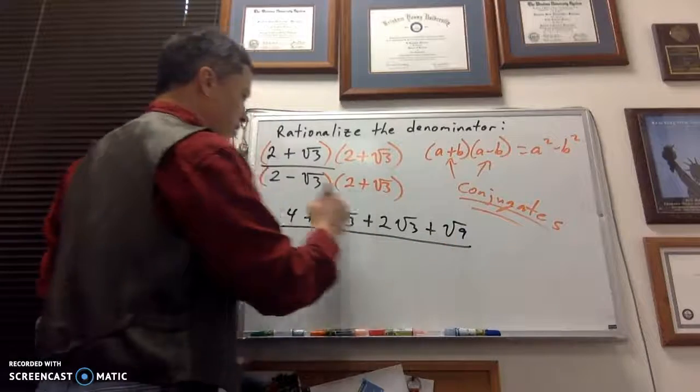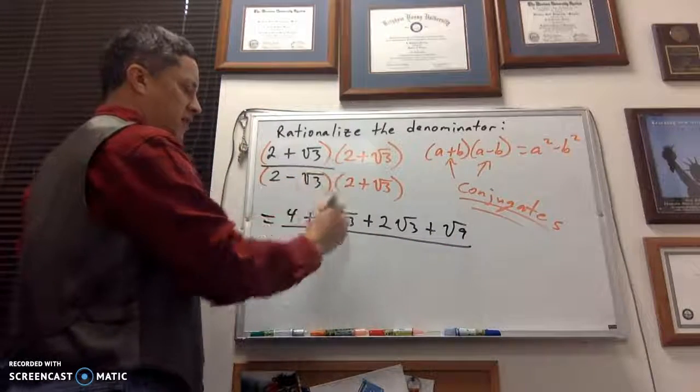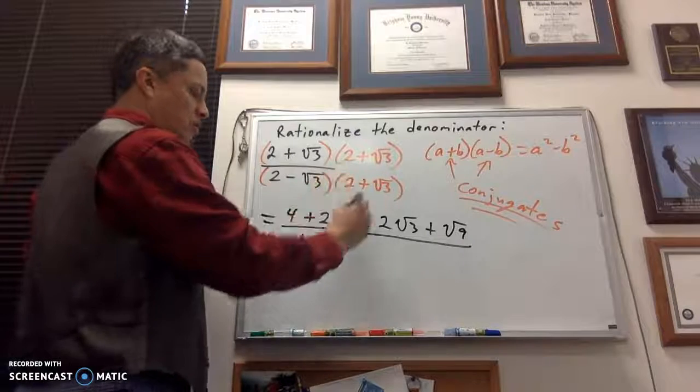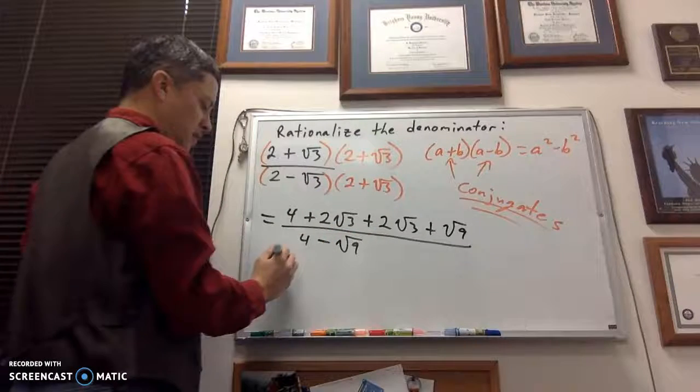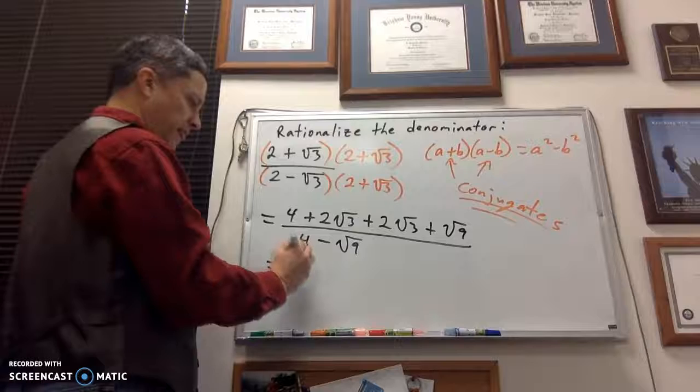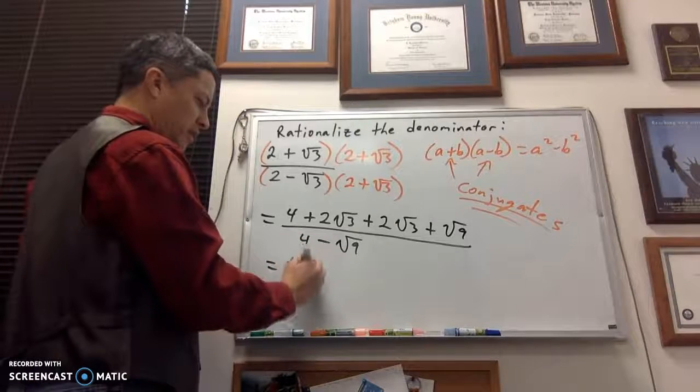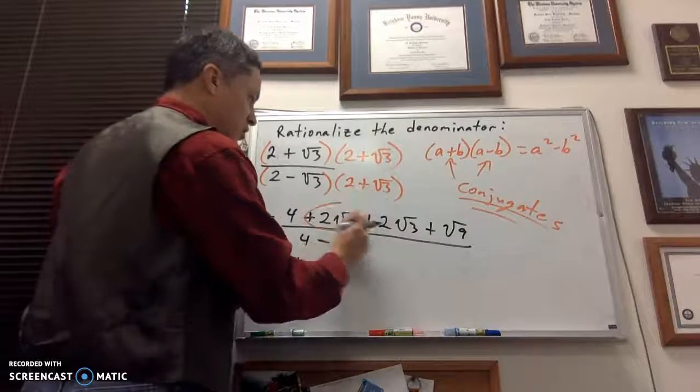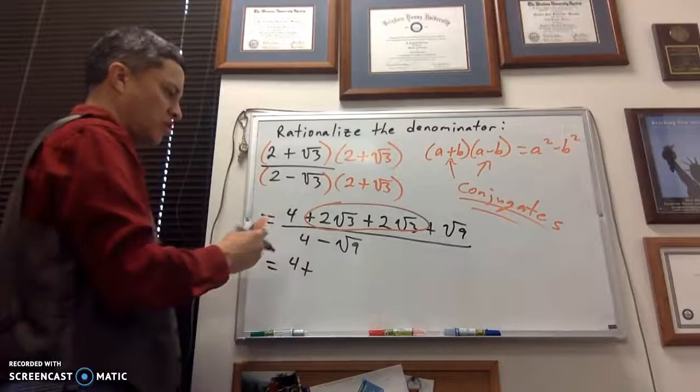And then in the denominator, 2 times 2 is 4. Negative times the positive is negative. The square root of 3 times the square root of 3 is the square root of 9. So now, we're looking at 4 plus, let me combine these guys, the 2 root 3s plus the 2 root 3 there.